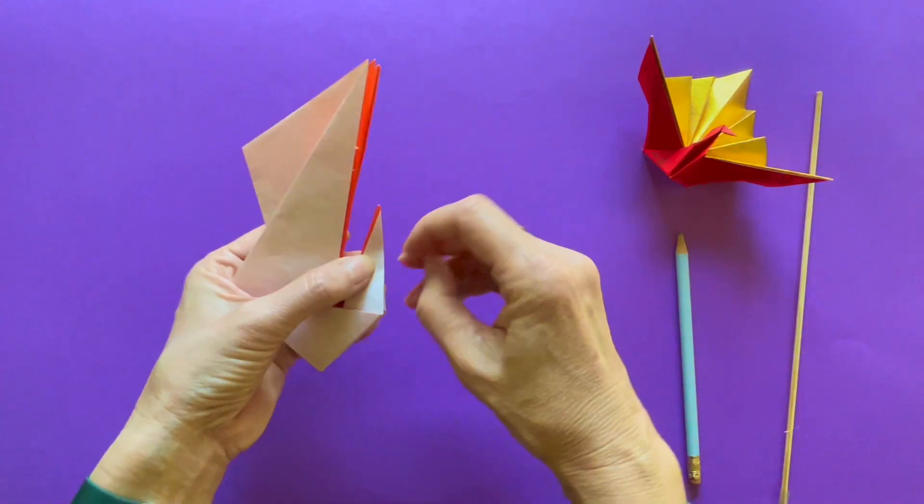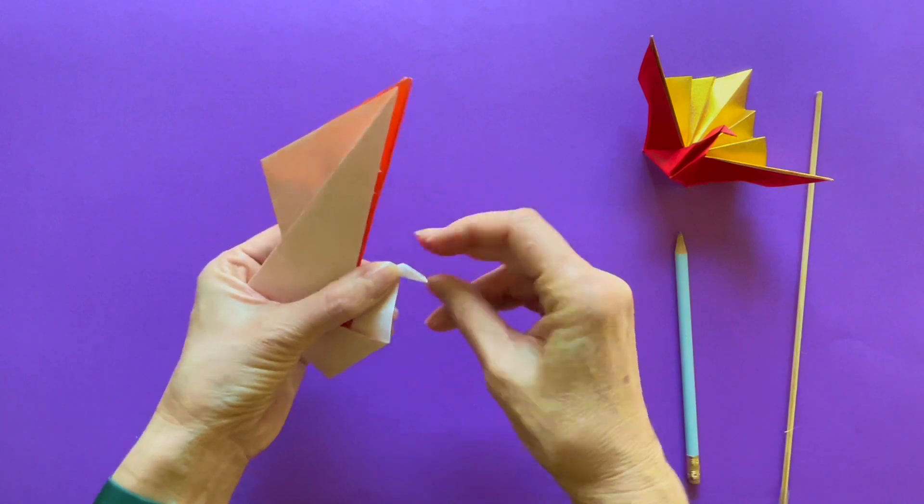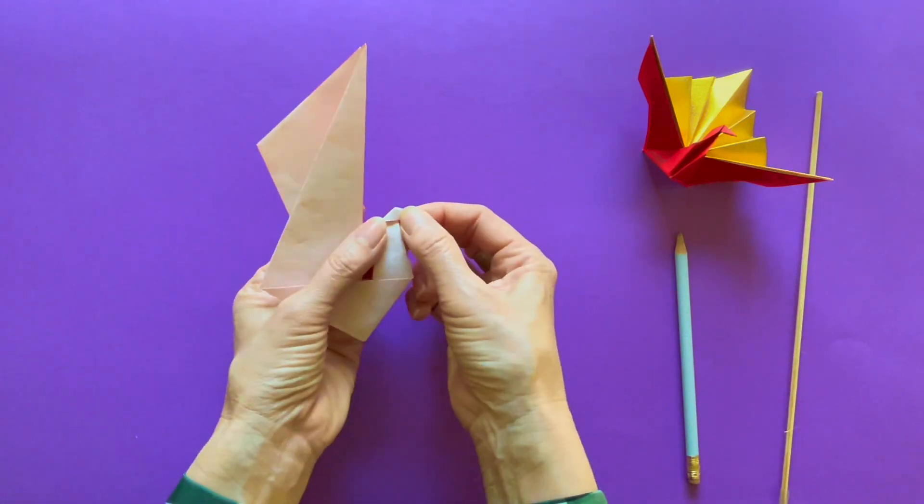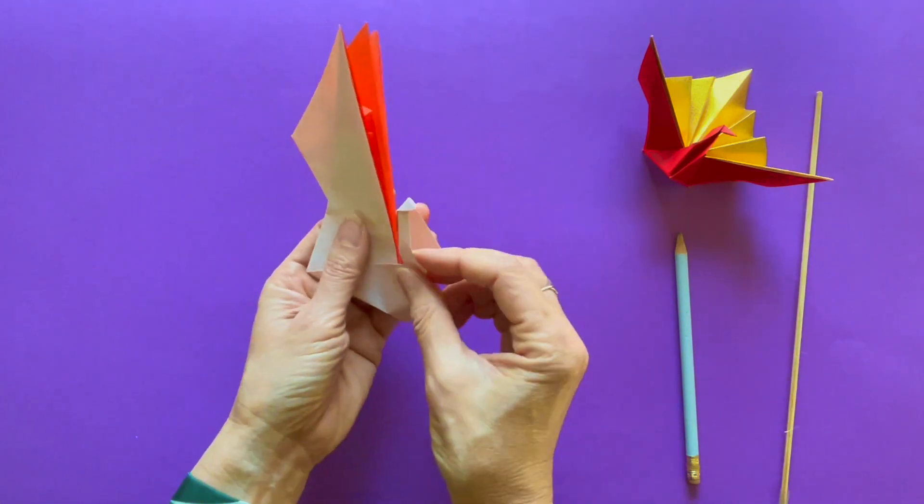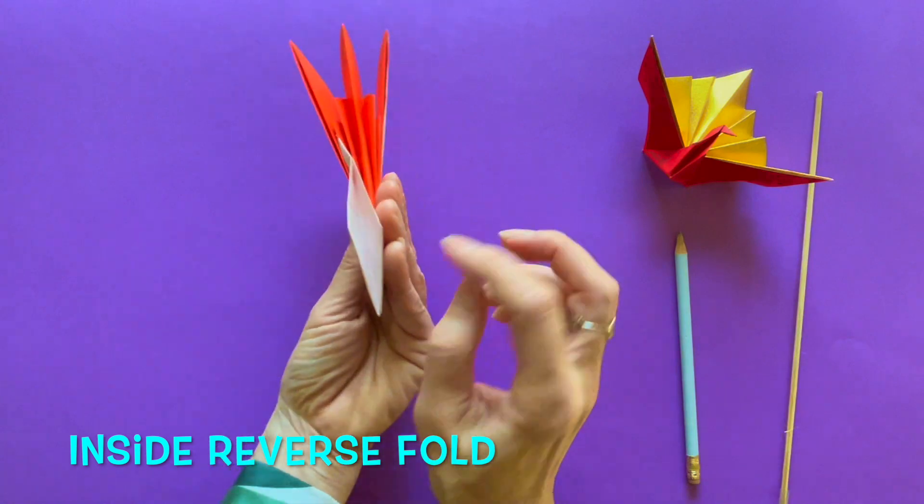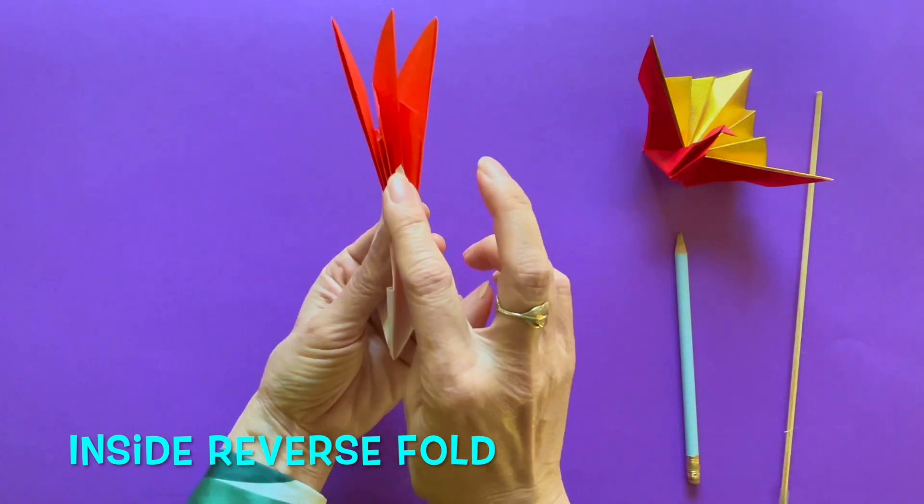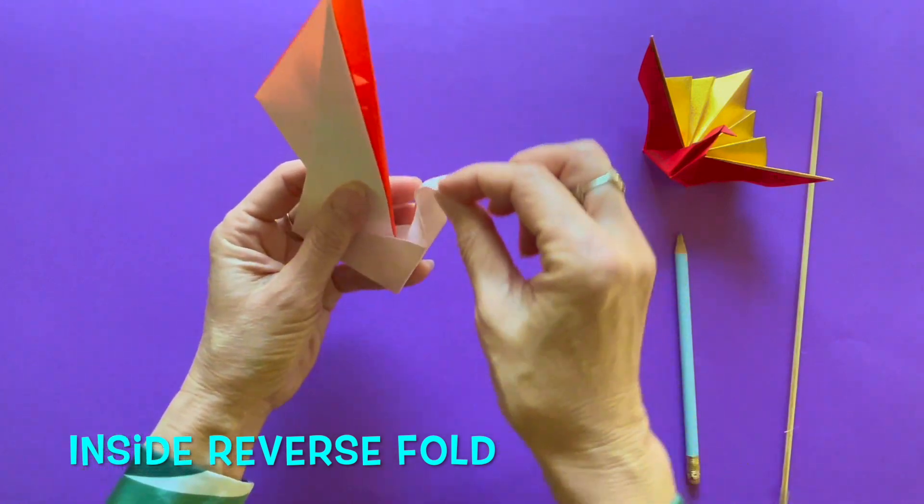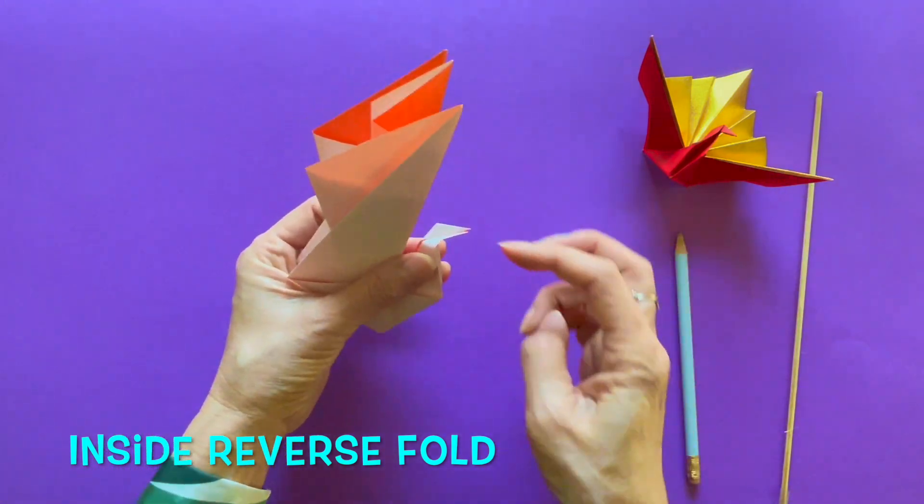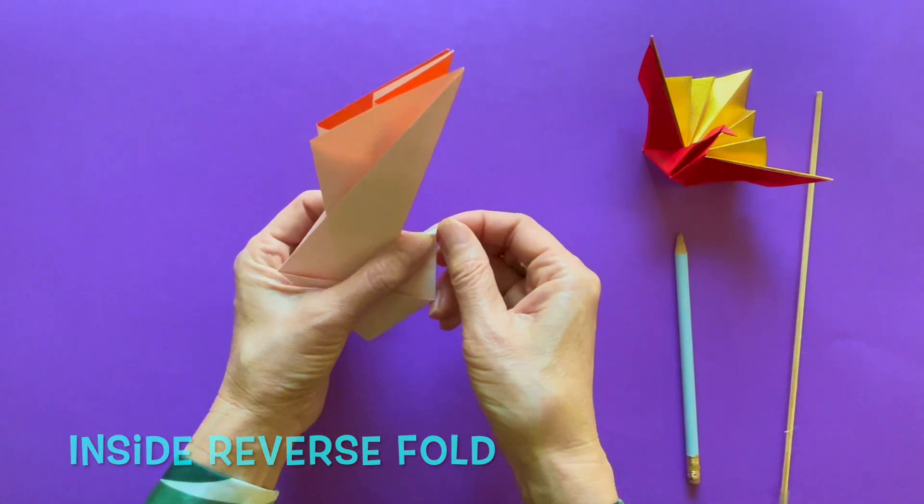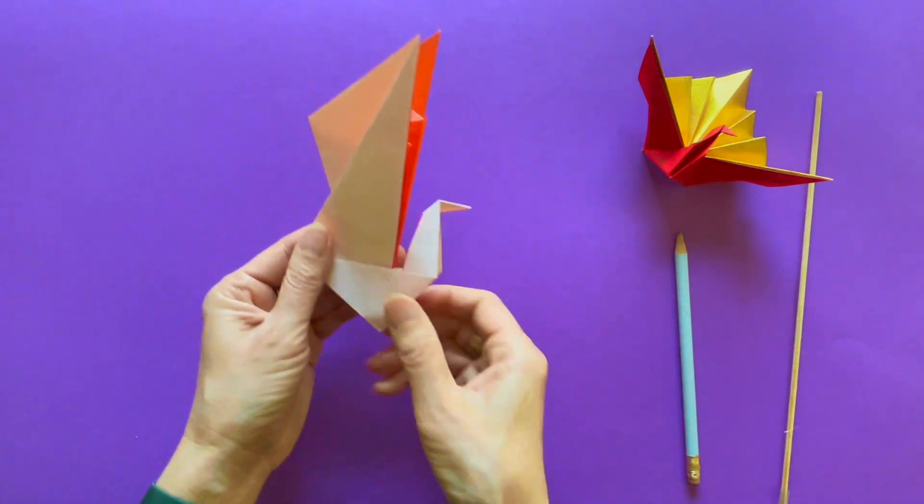And grab the small sail on the boat and make the head of the bird. It's small. Next step is inside reverse fold. From the bottom, you open it up. And from the top, this time from the top, push it down. It's done.